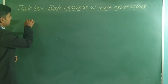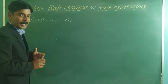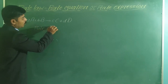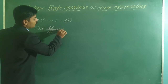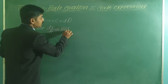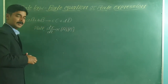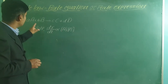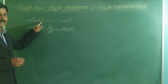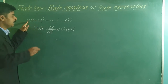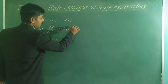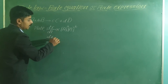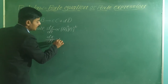Let us consider a general reaction. According to law of mass action, the rate of the reaction is directly proportional to the product of molar concentration of the reactants raised to their appropriate powers. To write an equation between these two, we replace the proportionality sign by an equal sign and add a constant.